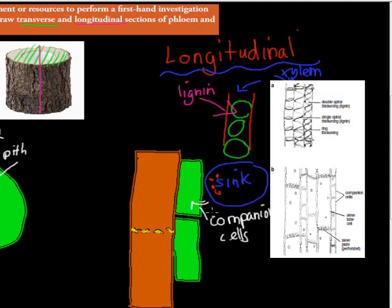So the companion cell actually helps it to pump this into the phloem. So the companion cells are there to help actually pump sugar or sucrose into the phloem.